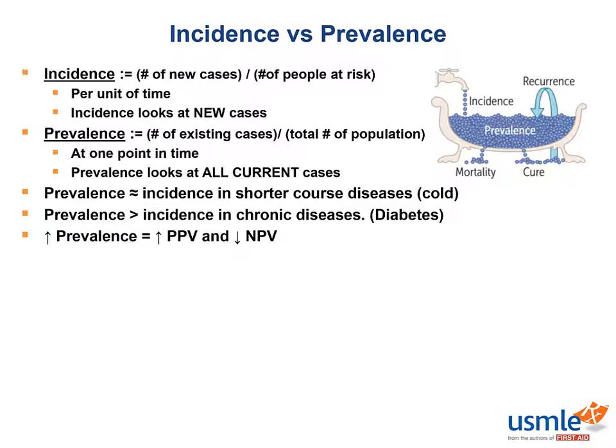An increase in prevalence also leads to an increase in positive predictive value. Recall that positive predictive value indicates that a person who tests positive for a disease is more likely to actually have the disease. So it would stand to reason that if the disease in question is more common in the population, the chances of a positive test being a true positive are more likely.